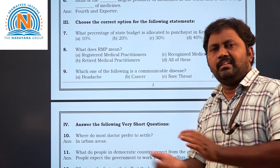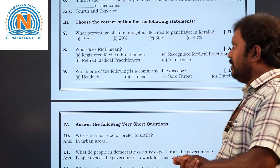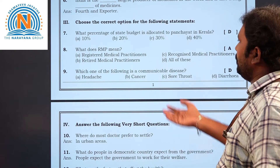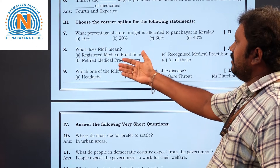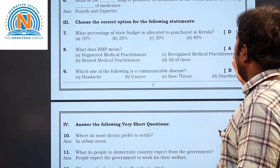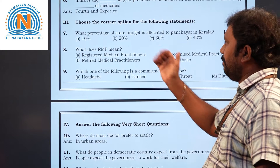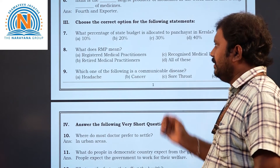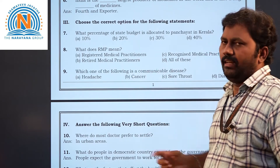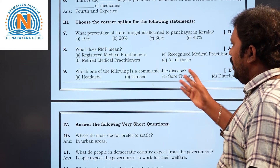Eighth question: what does RMP mean? The options include registered medical practitioners, recognized medical practitioners, and retired medical practitioners. The correct answer is registered medical practitioners.